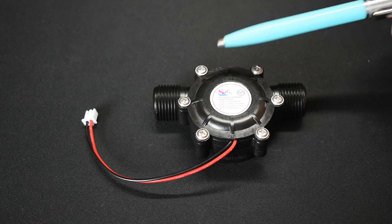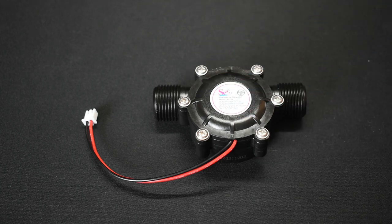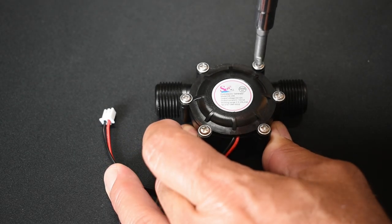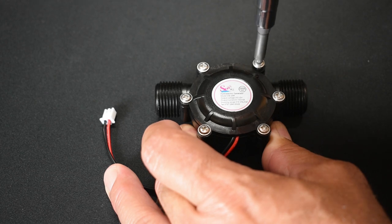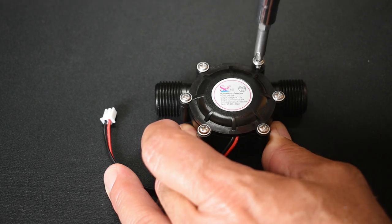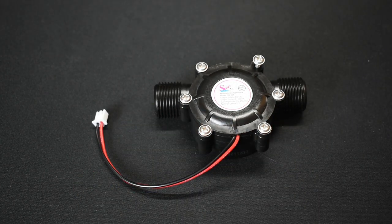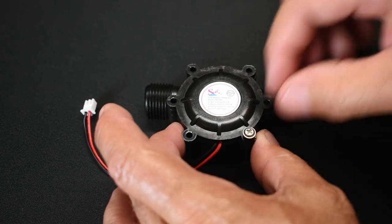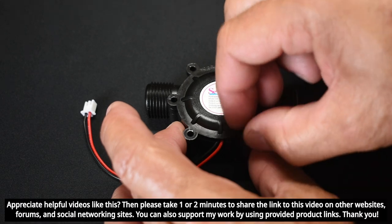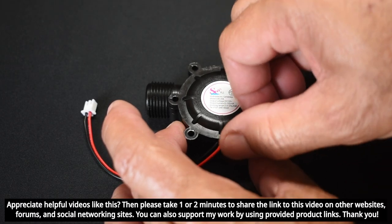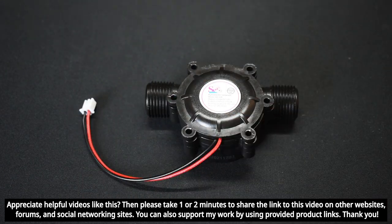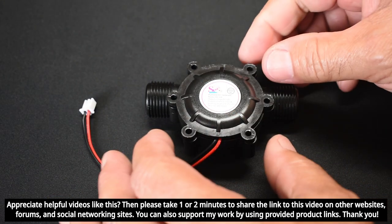So first let's open this up take a look at the inside and see how it's made. Let me carefully remove all six Phillips screws. I'm sure there's going to be some seals here to prevent water from leaking out. Okay the last screw. And just so you know this is not very expensive. I think I paid around 12 bucks. Okay let's lift this cover off.